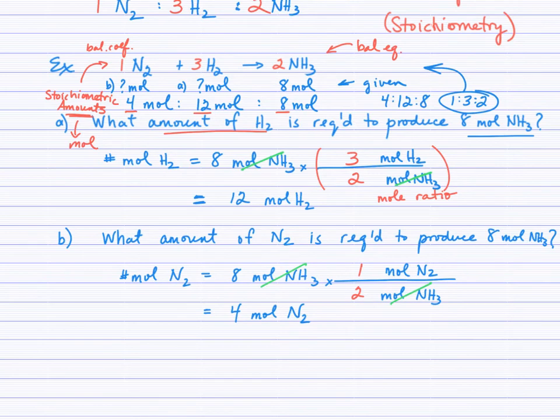Is there a different set of stoichiometric amounts? Sure, any ratio that combines in the ratio of 1:3:2. That's it for our mole ratio lesson.